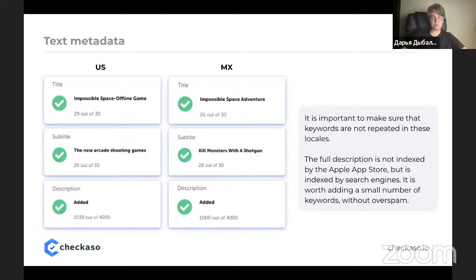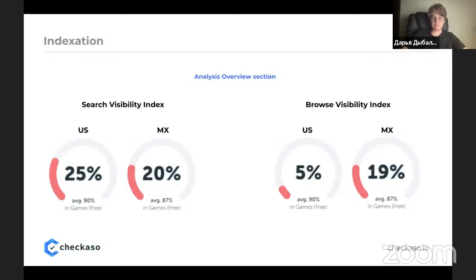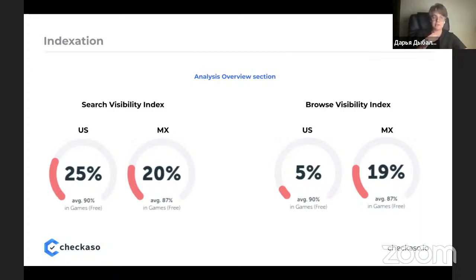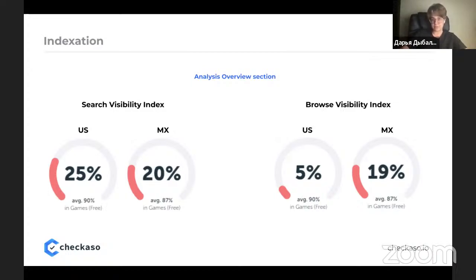Indexation looks pretty bad — the app has extremely low indexation in the game/screen category for both localizations, showing users can hardly find the app in the store. We strongly recommend working more with the semantic core and trying different relevant keywords in your textual metadata. You can also use the in-app promotion tool to add more space for search terms, because every promoted in-app title is indexed just like other keyword spaces, increasing your number of search terms.